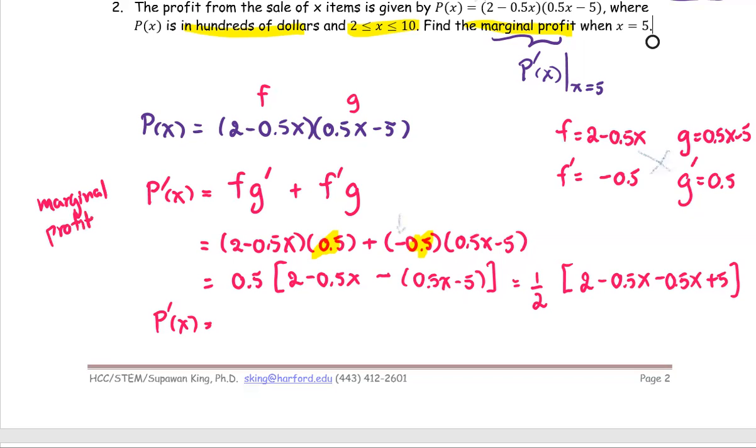P prime of x is one half multiplied by 2 plus 5, that's 7, negative 0.5 minus 0.5, that's minus 1, so minus x. So here is the simplified form of the marginal profit.